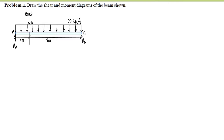Problem number four: draw the shear and moment diagram of the beam shown. First, we compute for the reactions and supports. We have a uniformly distributed load over span AC, so we compute for the resultant of the load. The resultant acts at the centroid, which is at the midspan of the beam. The resultant of the UDL is just the area of the rectangle.